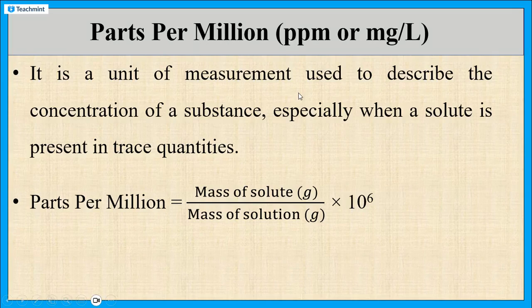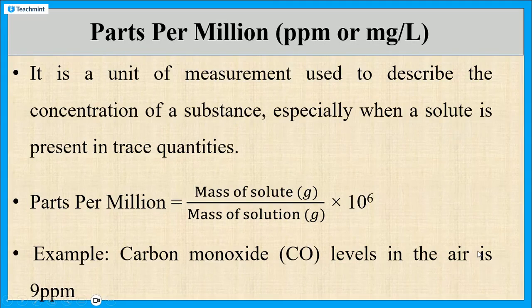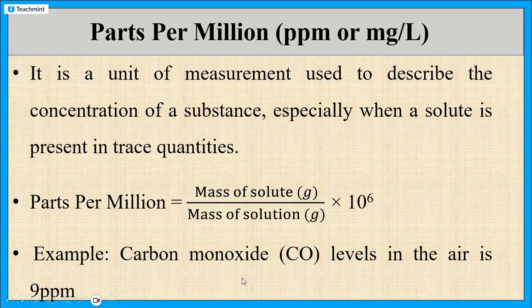To understand this PPM concept, we will give one simple example. Carbon monoxide levels in the air is 9 PPM. What is the meaning of this? This means that for every 1 million parts of air, 9 parts are carbon monoxide.